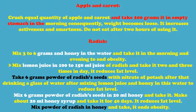Radish: Mix 3 to 6 grams of radish and honey in water and take it in the morning and evening to end obesity. Mix lemon juice and 100 to 150 milliliters of radish juice and take it two to three times a day to reduce fat level. Take 6 grams powder of radish seeds with nitrate of potash, then drink a glass of water mixed with lemon juice and honey to reduce fat level.